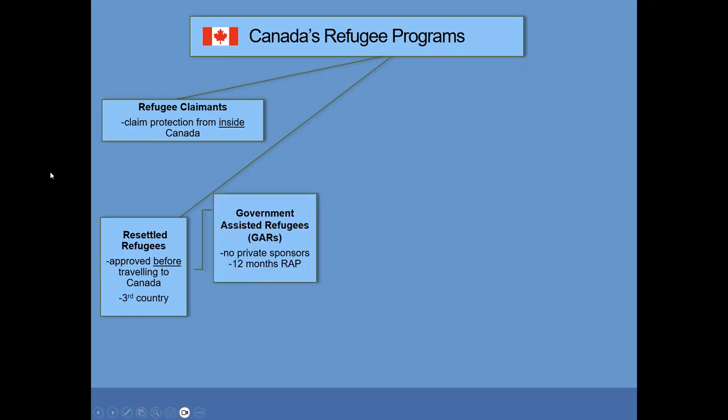The Government of Canada sponsors refugees through the Government Assisted Refugee Program. Government Assisted Refugees, or GARs, do not have private sponsors, and they receive 12 months of financial support through the RAP Program — the Resettlement Assistance Program.